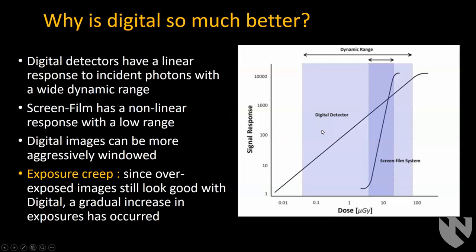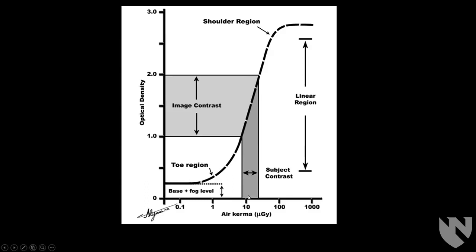The problem with digital systems is that if you give too low a dose, the images will look noisy. But if you give too high a dose, unlike with film where everything looks black, the images will still look good and won't be noisy. This leads to something called exposure creep, where you can end up delivering a higher dose of radiation than necessary while still producing good-looking images on digital systems.